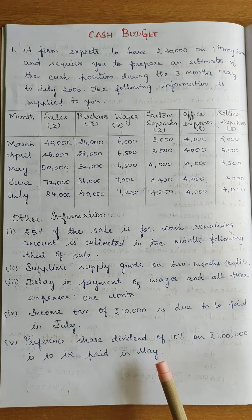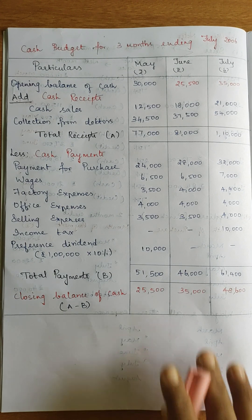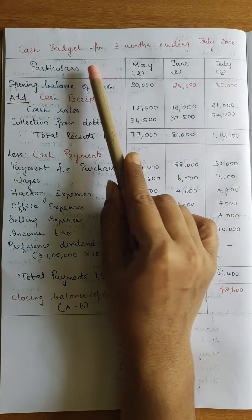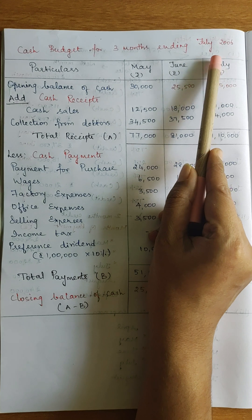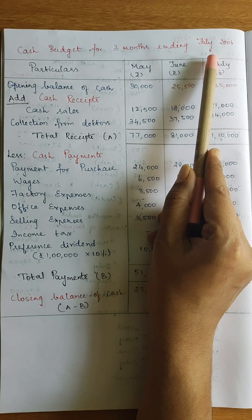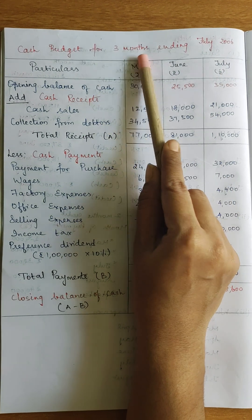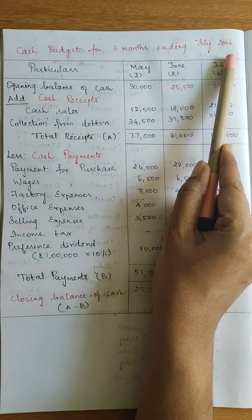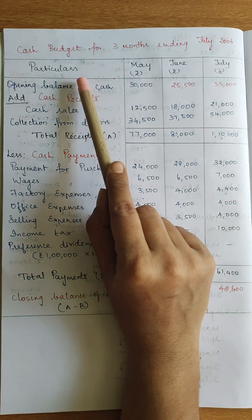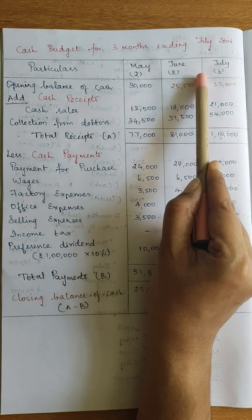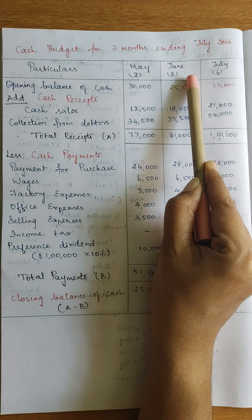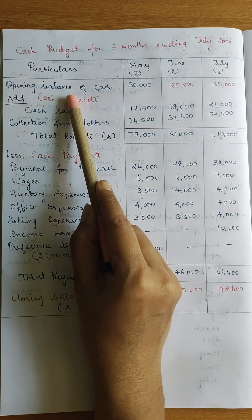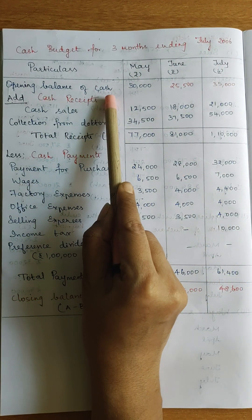So first, before we solve, let's see the format of the cash budget. The heading is: Cash Budget for 3 months ending July 2006. We prepare for May, June, and July — 3 months. Open 3 columns. Under particulars, for each month we prepare columns. The first item is the opening balance of cash.